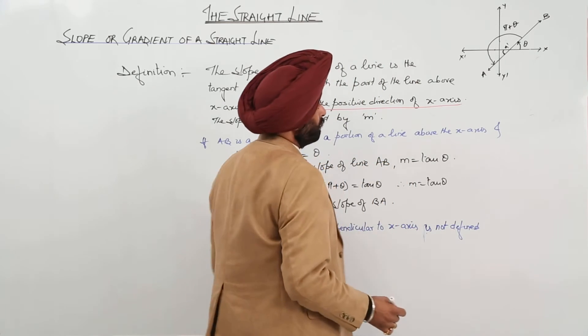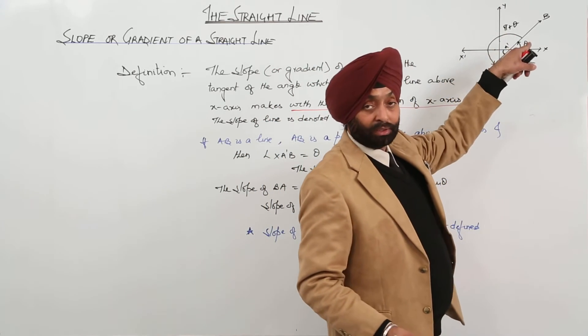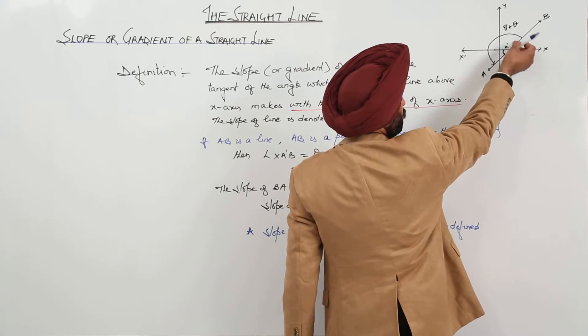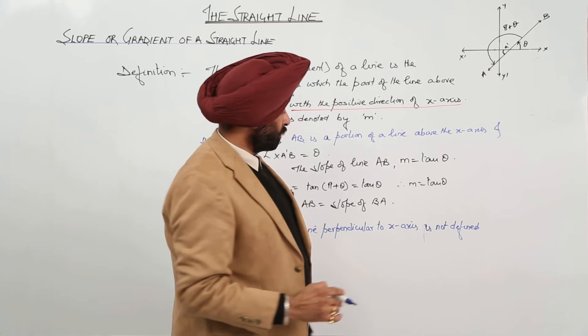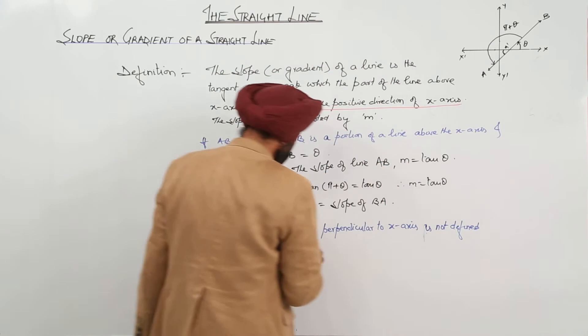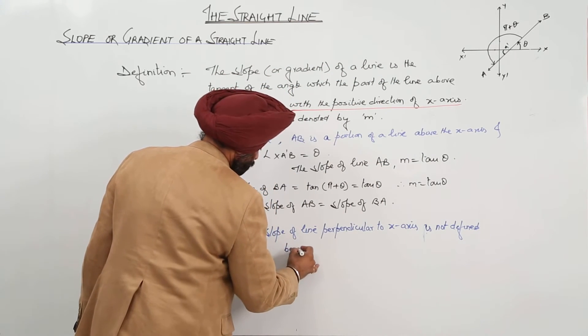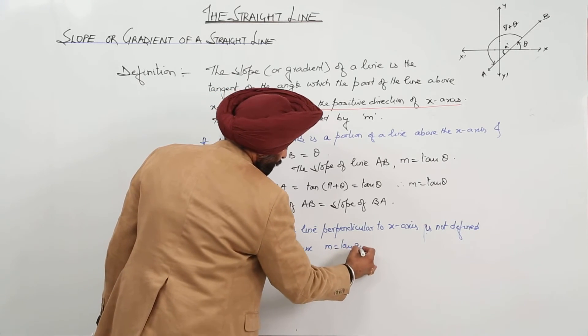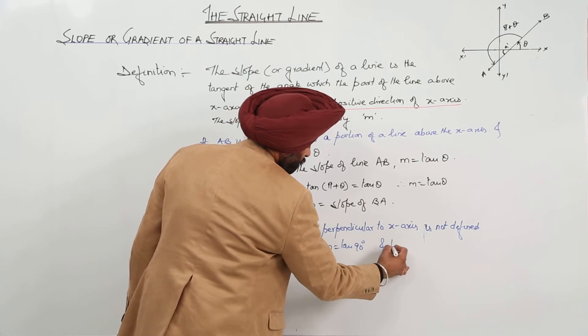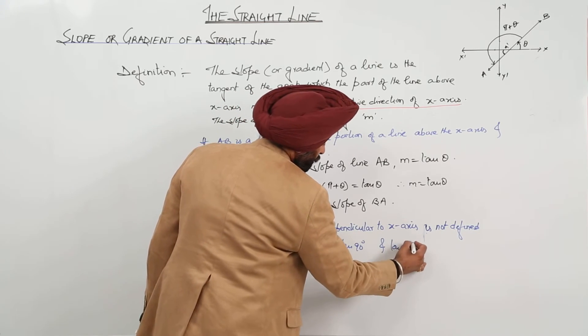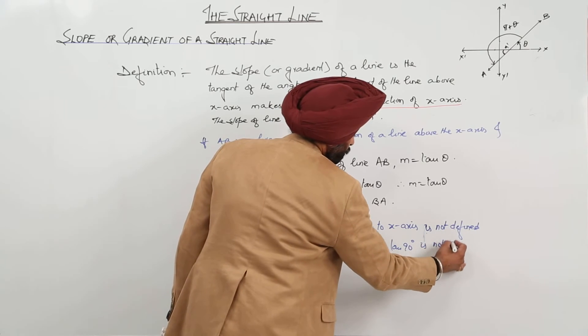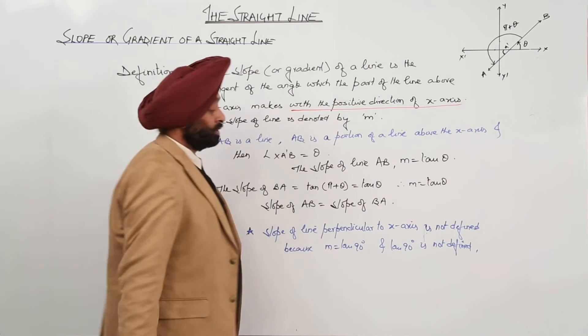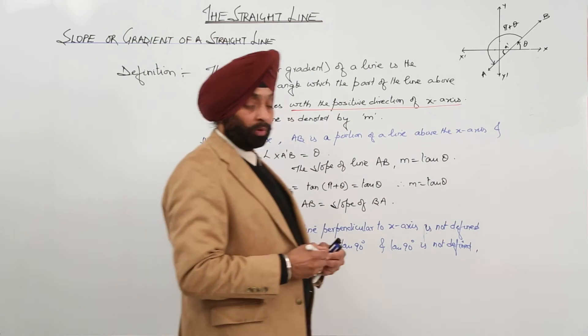Now, which part? This part. If we can say y-axis, a line from x-axis, like this one, and moving till y-axis, it makes an angle of 90 degrees. Why? Because here, m is equal to tan 90 degrees, and tan 90 degrees is not defined. So, this was all some basic things about the slope of a line.